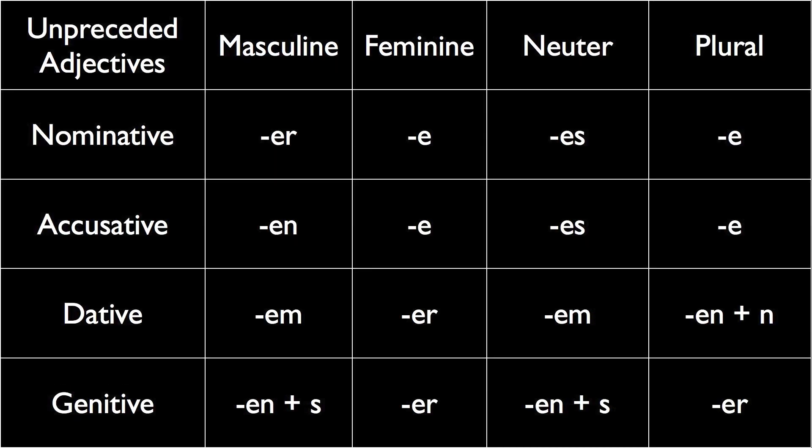Now let's take a look at the unproceeded adjective endings. The nominative, accusative, and dative cases are the exact same thing as you would see at the end of diese, jede, manche, welche, and so on. The only difference between the endings on those words and the endings on adjectives not preceded by der words or ein words is in the genitive case. The genitive case takes an EN, ER, EN, ER pattern instead of an ES, ER, ES, ER pattern. Note that the EN in the plural dative also goes at the end of the noun, and the ES in the masculine and neuter genitive still goes at the end of the noun.